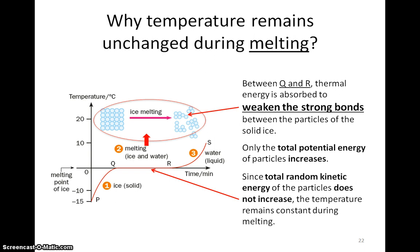In summary, for P to Q and Q to R, the internal energy of the particles increases. For P to Q, only the random KE increases. However, for Q to R, only the PE of the particles increases. Remember, only one component of the internal energy, be it random KE or PE, can increase at a time.